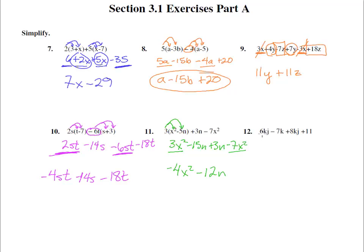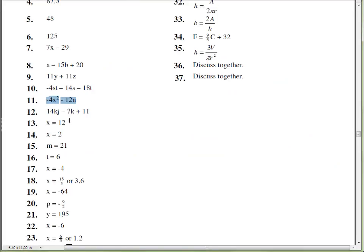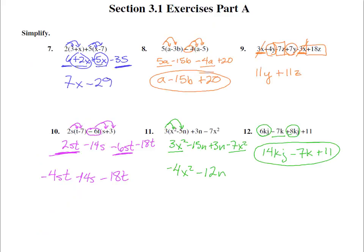Number 12. 6kj-7k+8kj+11. Do we have parentheses? We do not. So we can just collect things that are alike. Those two are alike and we get 14 of those kj's. And then the k, we just have the 1k, so -7k and +11. Let's double check that that's correct. 14kj-7k+11. That is correct. Good.